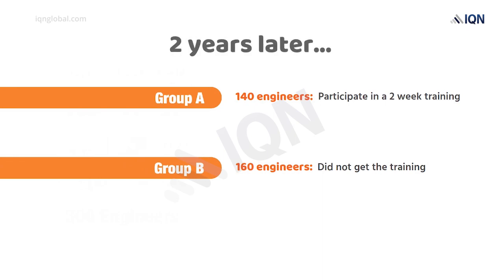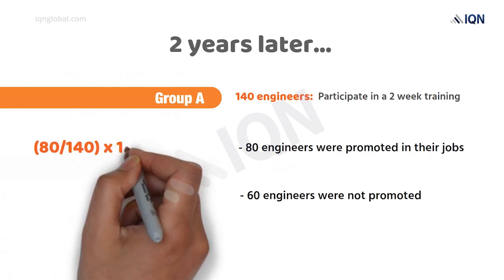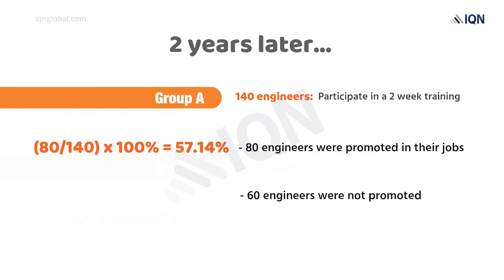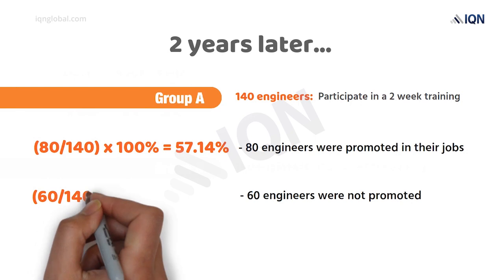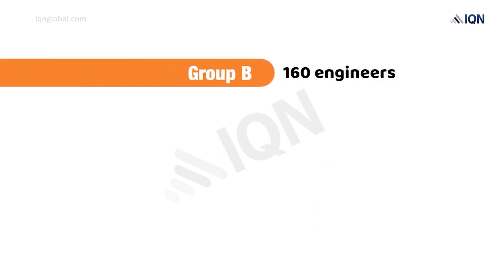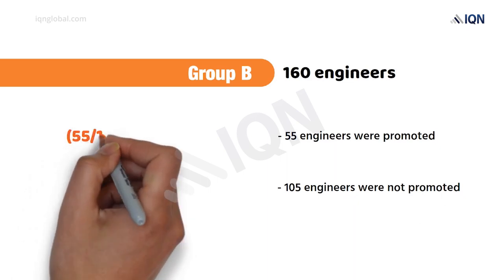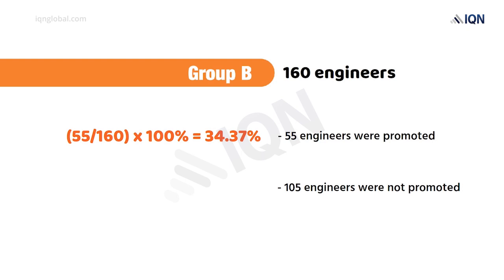After two years, out of 140 engineers from Group A, 80 engineers were promoted and 60 were not promoted. This means 57.14% of engineers from Group A were promoted, and 42.86% were not promoted. On the other hand, out of 160 engineers from Group B, 55 engineers were promoted and 105 were not promoted, which means 34.37% of engineers from Group B were promoted, and 65.63% were not promoted.